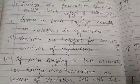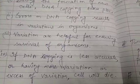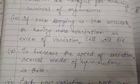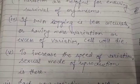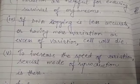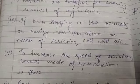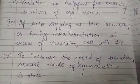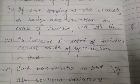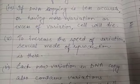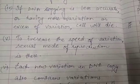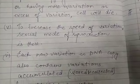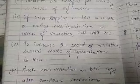If DNA copying is less accurate, or there are excess variations, then the cell will die. Therefore, to increase the speed of variation, the sexual mode of reproduction is there. Each individual already has some variation occurring within them.